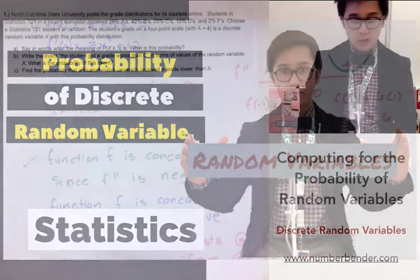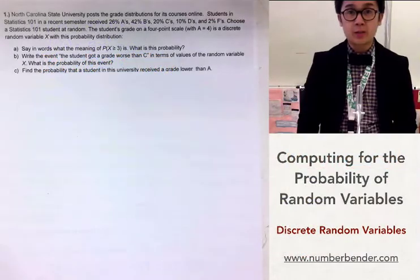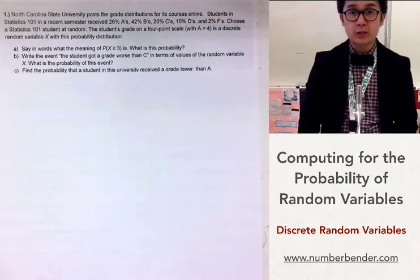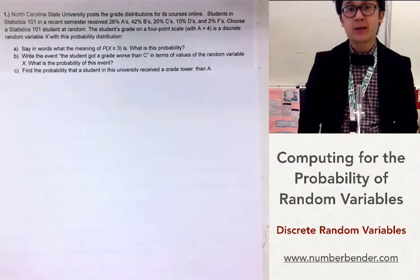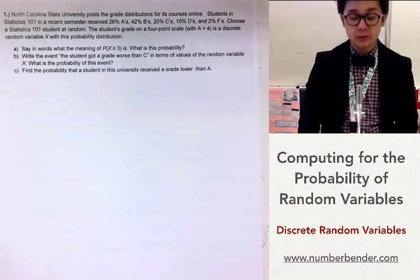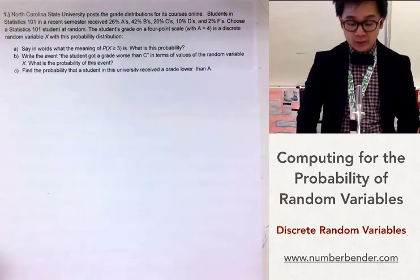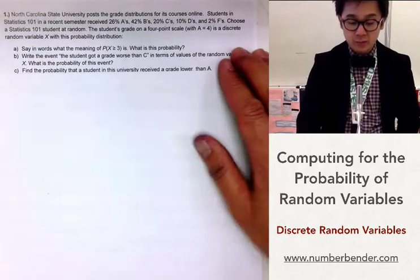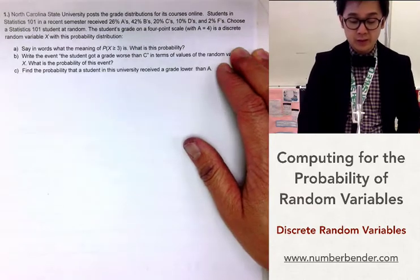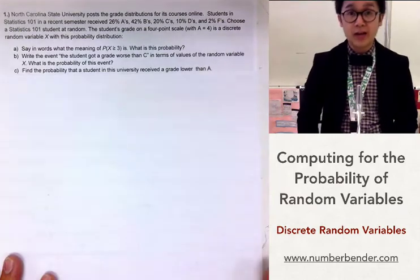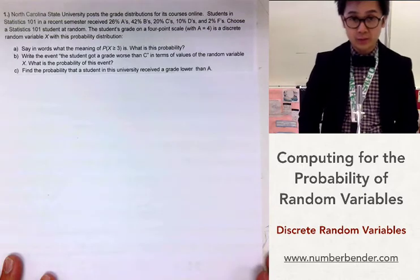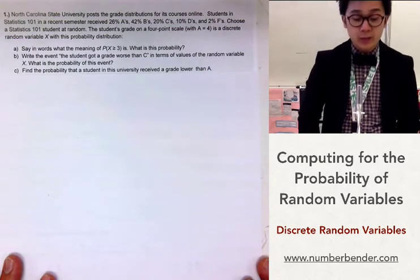Today we're going to be working on finding the probability of some random variables, specifically discrete random variables. It's called discrete random variables because the possible values of x, or the random variables, will be whole numbers.